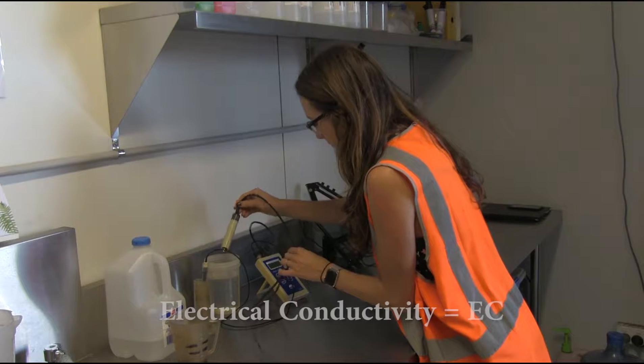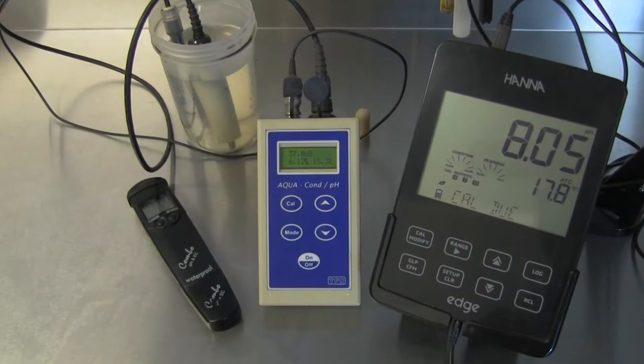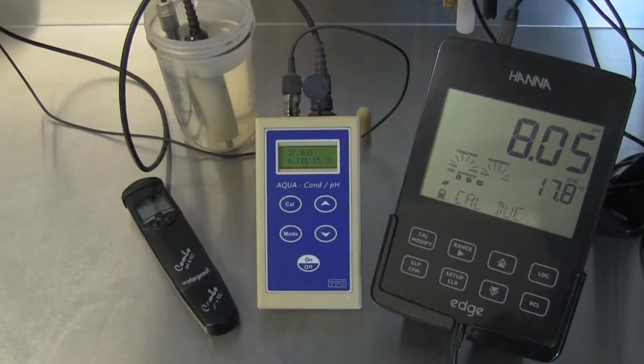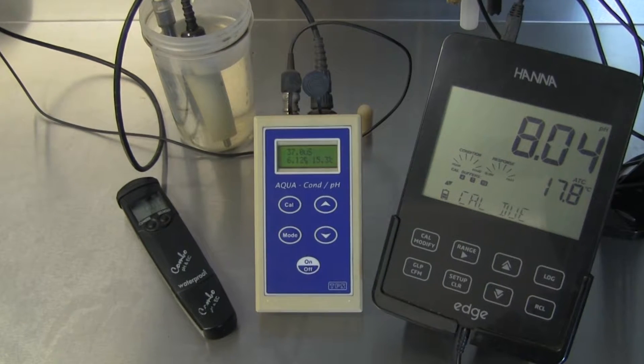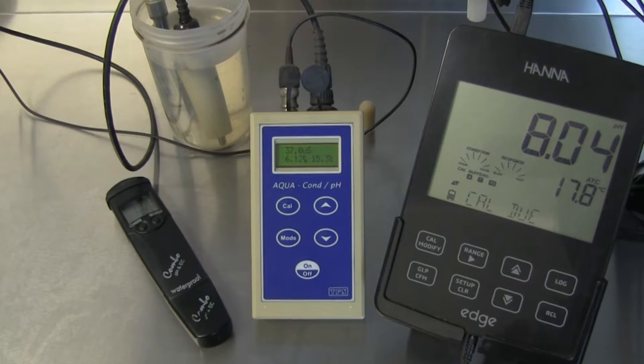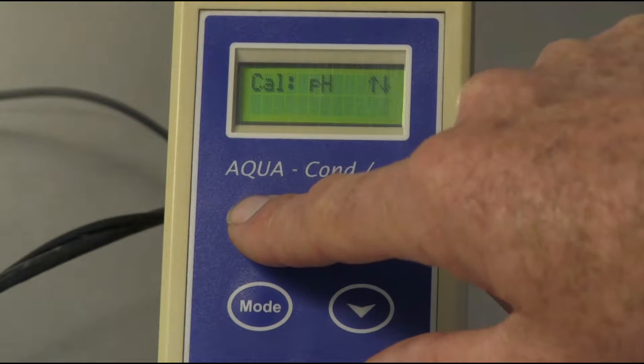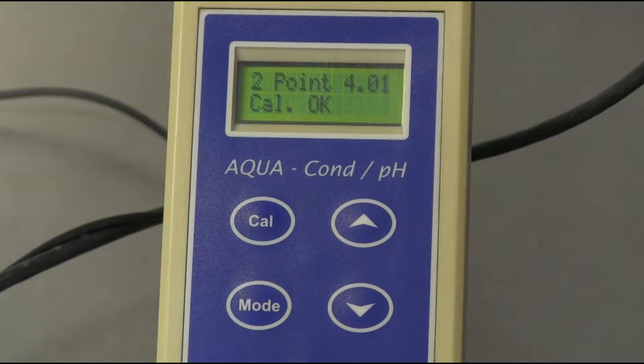pH and electrical conductivity meters are extremely useful pieces of equipment used to measure and monitor basic chemical characteristics of water and growing media. Regular and correct calibration of this equipment is necessary to ensure the results are as accurate as possible. The following video describes the basic procedures for calibrating pH and EC meters.